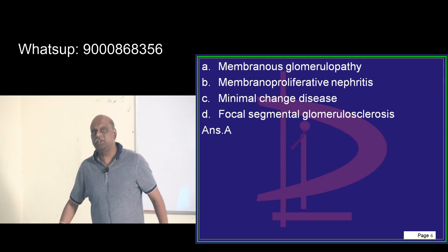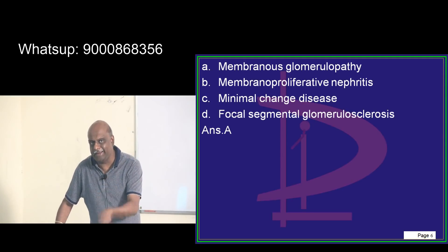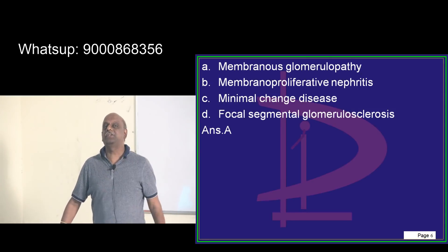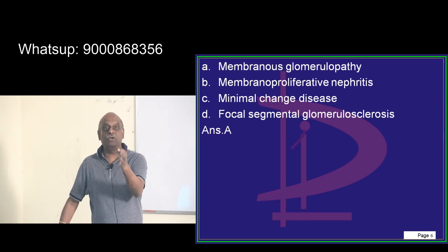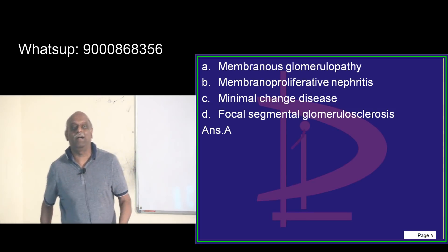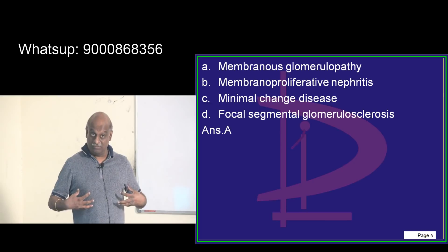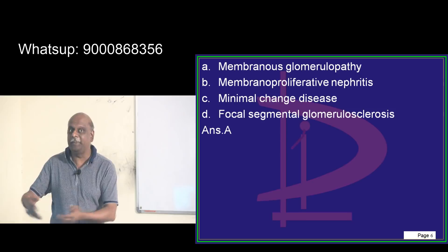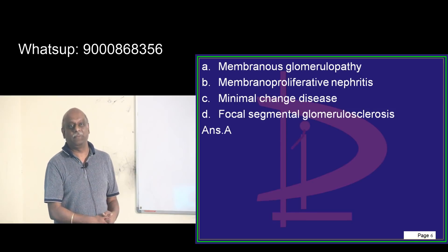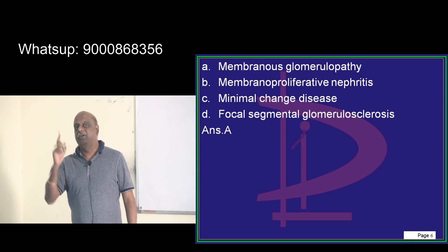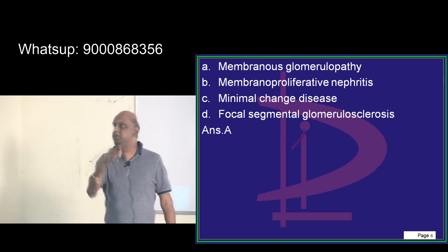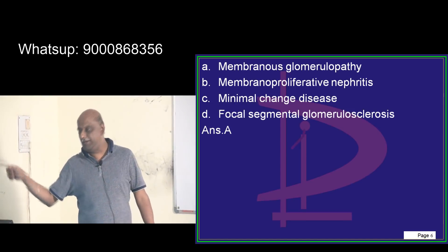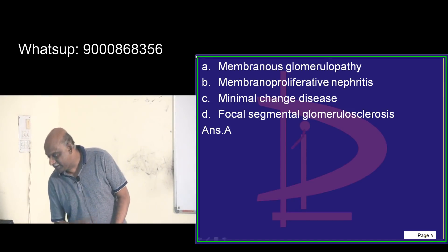Whenever membranous nephropathy is found in the kidney, what is the most important underlying diagnosis you should look for? Most of the times you have to look for underlying lymphoma. Lymphoma presents itself as membranous nephropathy presenting as nephrotic syndrome. Never leave a case of membranous nephropathy just like that — you should look for an internal malignancy, most commonly a lymphoreticular malignancy.